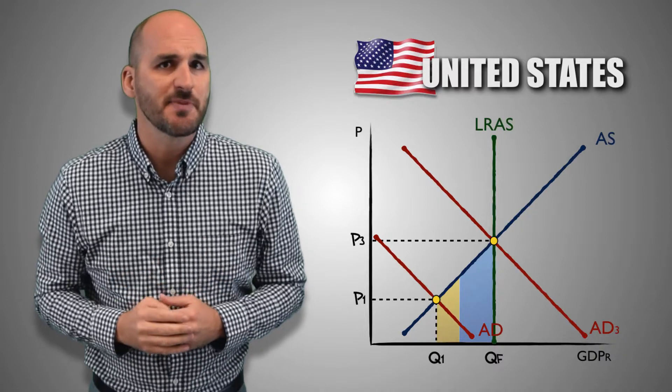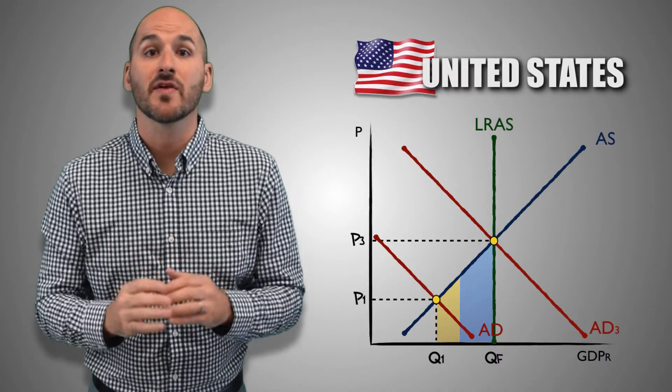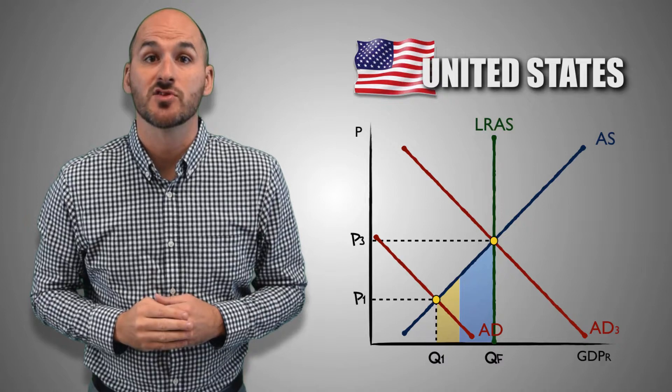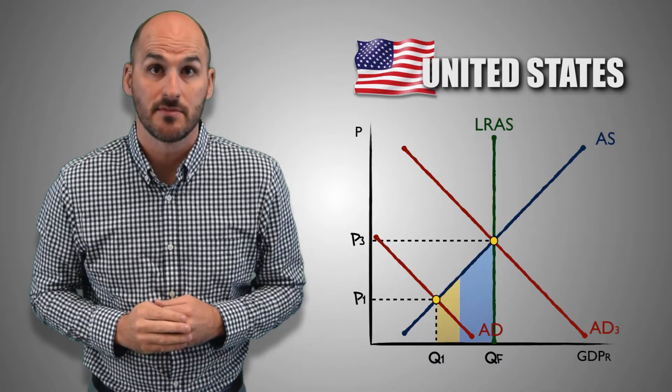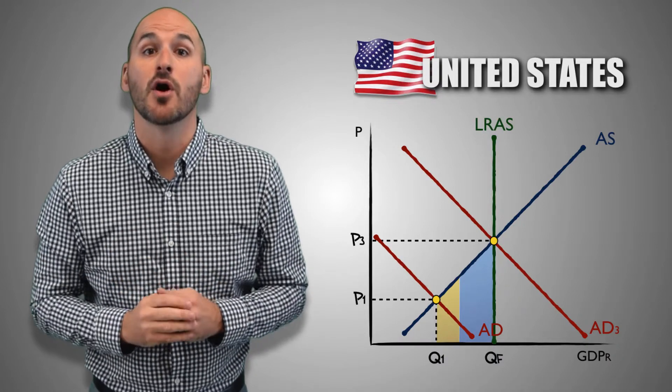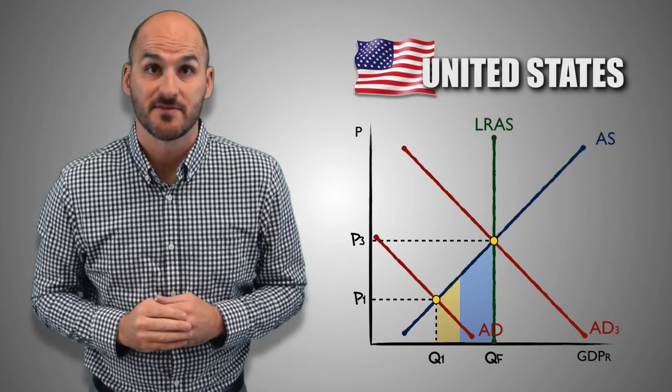To use fiscal policy effectively, government must account for both the increase in aggregate demand caused by the initial policy itself, and the aggregate demand created by the multiplier effect of consumer spending that occurs as jobs are created and income levels increase. But how can this be done? It depends entirely on how likely consumers are to spend or save their disposable income. These are known as consumer propensities.